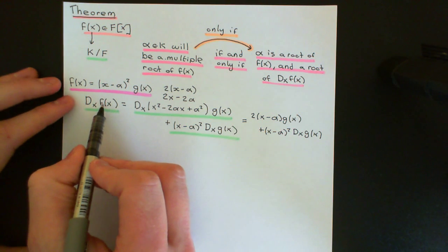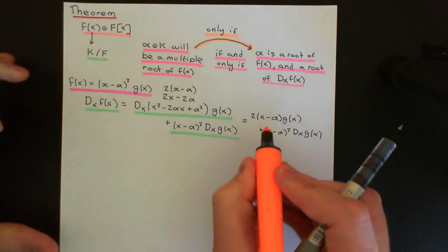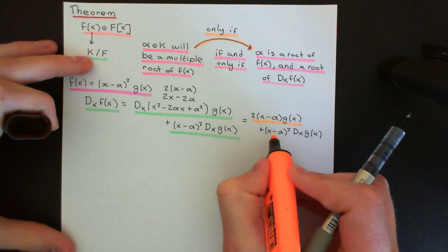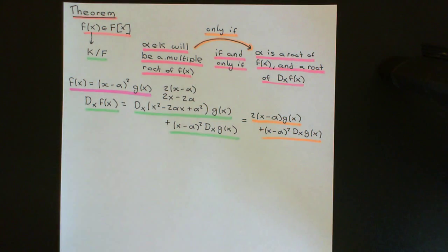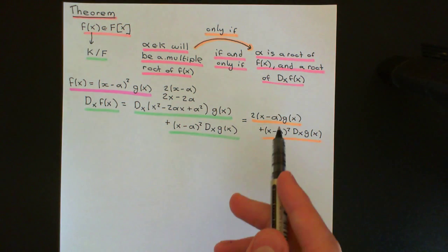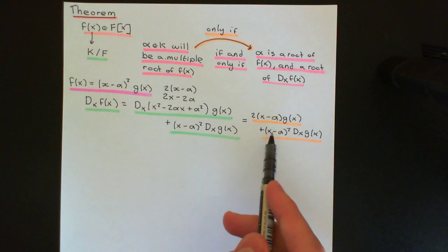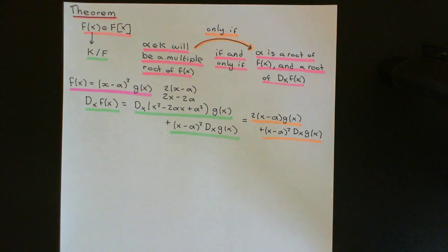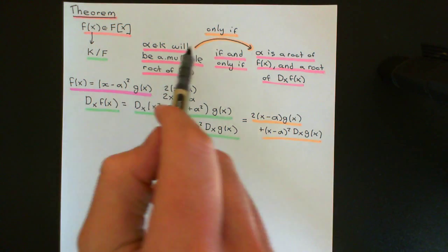The derivative of f(x) is the same whether computed over F or over K, since K is a field extension of F. But working in the splitting field lets us factor things nicely. Clearly, if we substitute alpha into the derivative, both terms vanish — (alpha − alpha) = 0 — so f'(alpha) = 0. This means alpha is a root of f'(x). The only-if portion is now shown: if alpha is a multiple root of f(x), then alpha is a root of both f(x) and f'(x).